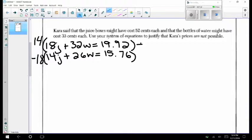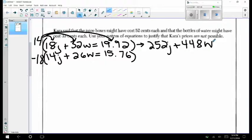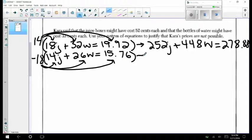Using our calculator let's see what our new equation will be when we multiply every term by 14. Similarly let's multiply our second equation by a negative 18 and using our calculator let's see what we end up with.